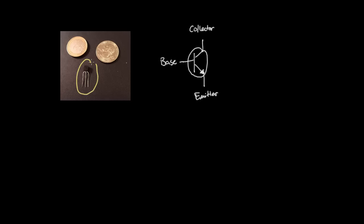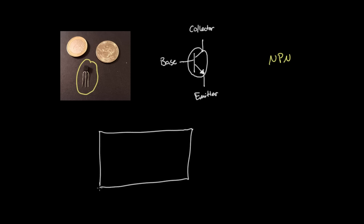This right here is a bipolar junction transistor, which is a pretty common kind of transistor. And this particular one is an NPN transistor. This transistor is made up of three layers of silicon. You can probably guess what NPN means: these two outer layers of silicon are N-type, and this middle layer is P-type — so NPN.